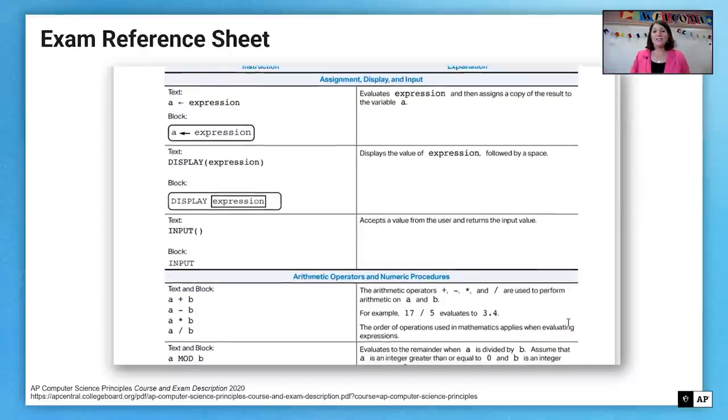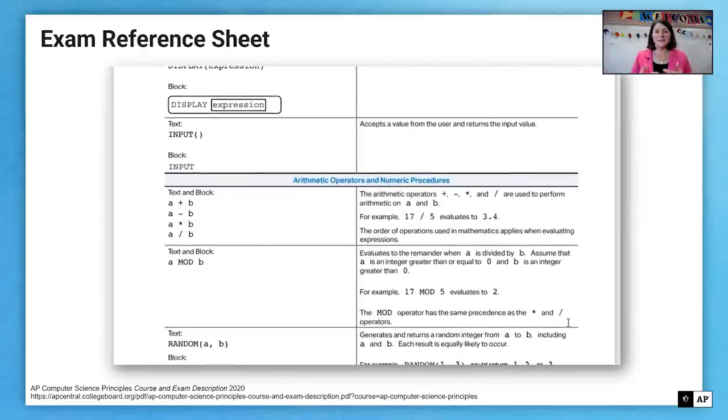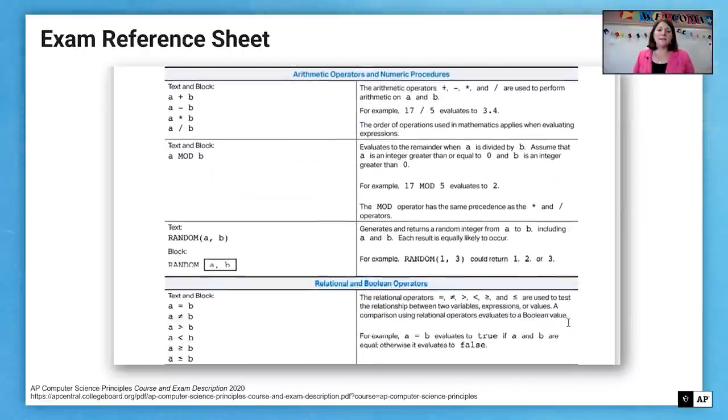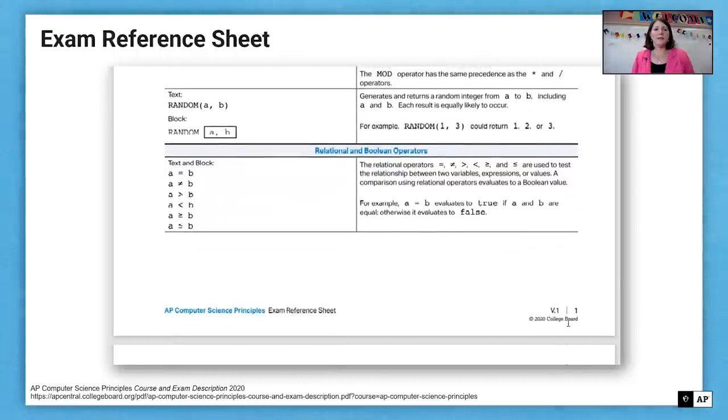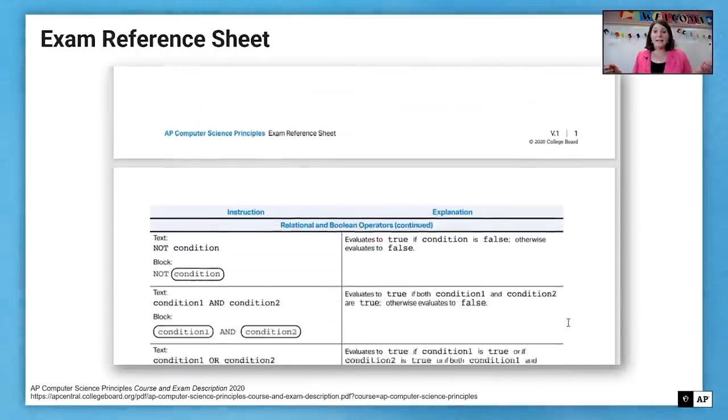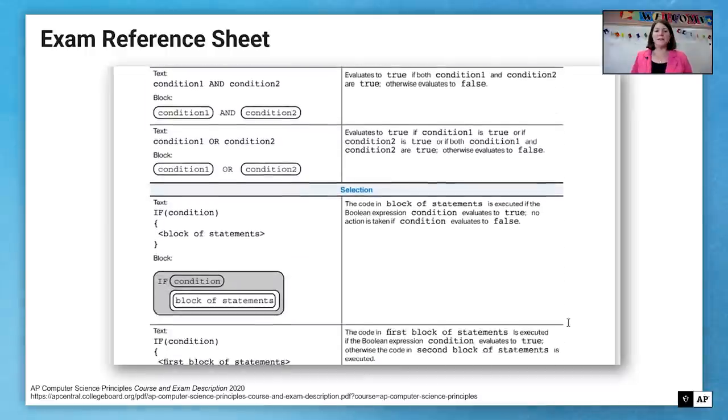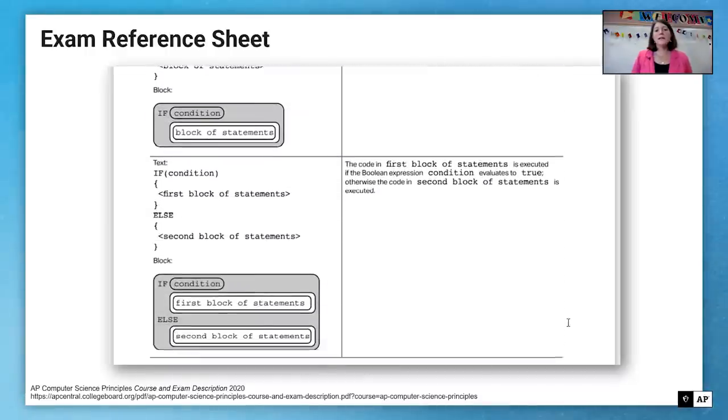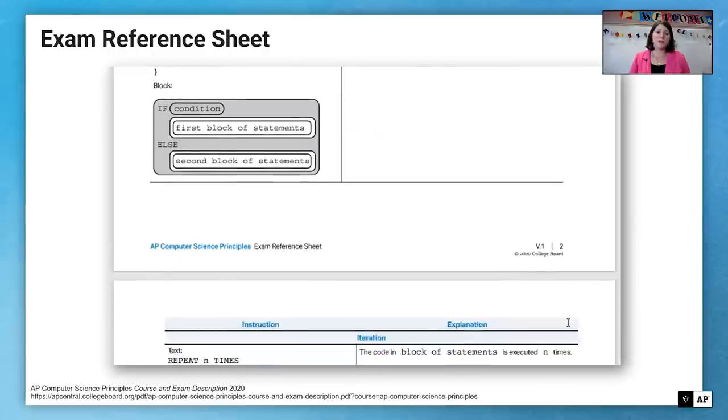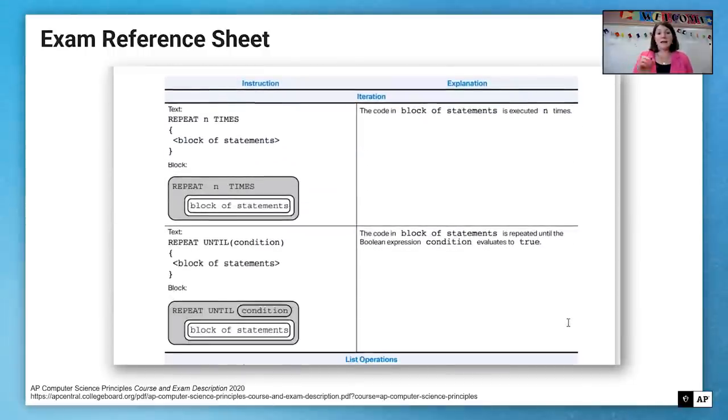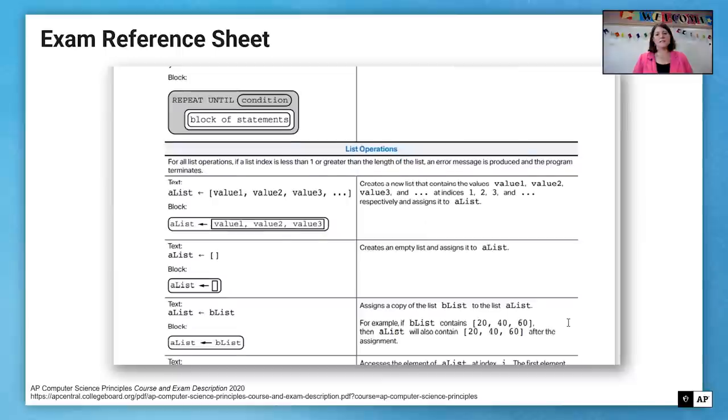So first off, remember that you have access to the exam reference sheet the entire time during the AP exam. You can find this on the AP website and you can see it scrolling here on the screen. It is a whole packet that describes the code that's used on the questions on the AP exam because it is the AP pseudocode. So it may not be the language you learn during class. Some questions may use blocks and some questions may use text, as you can see there on the screen.